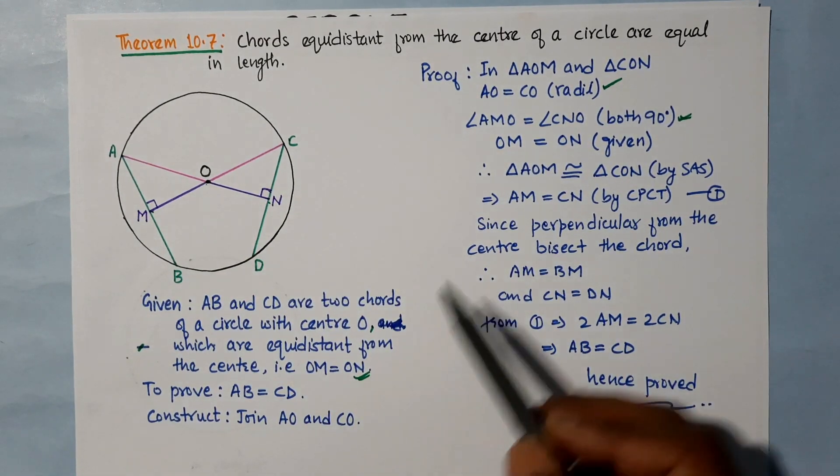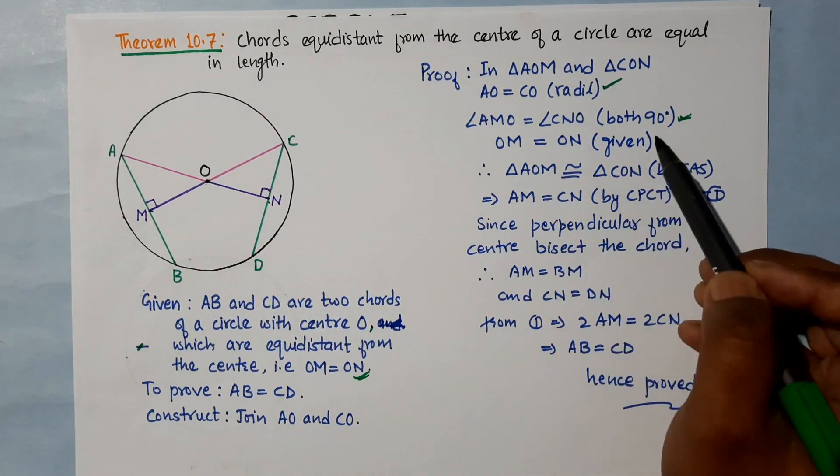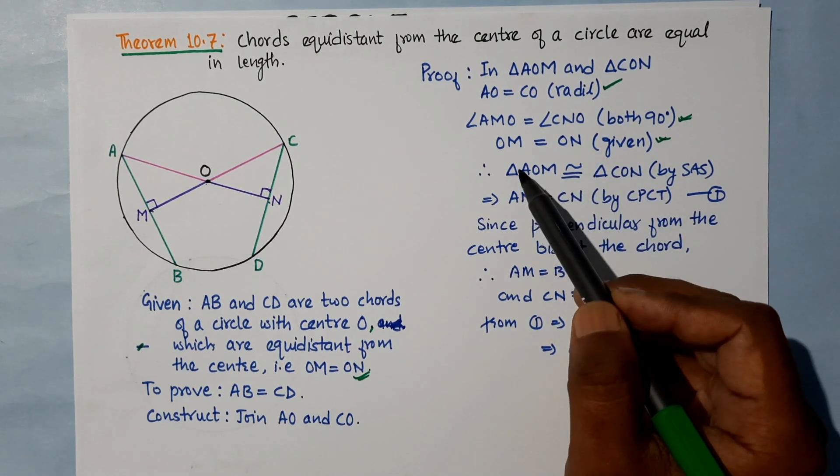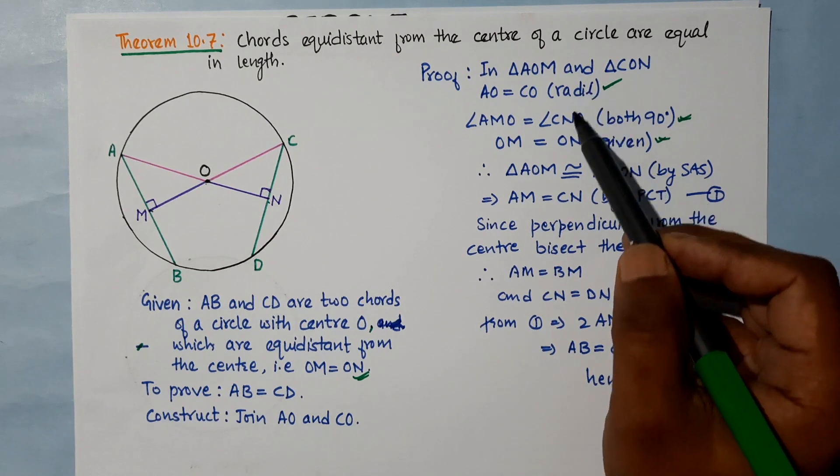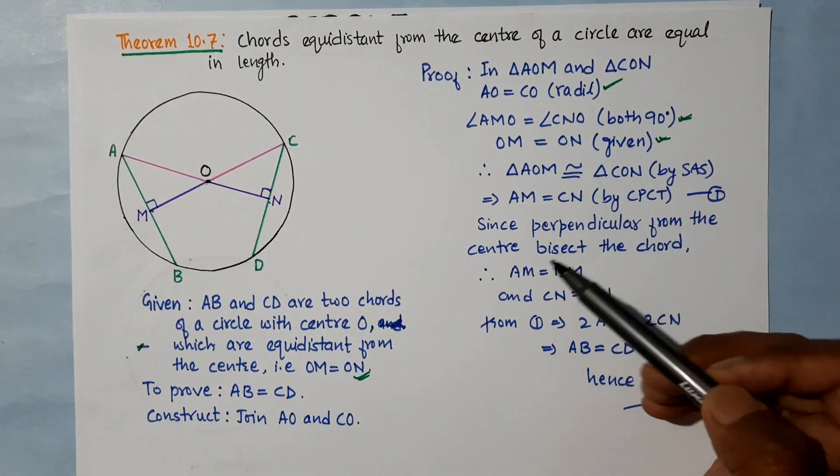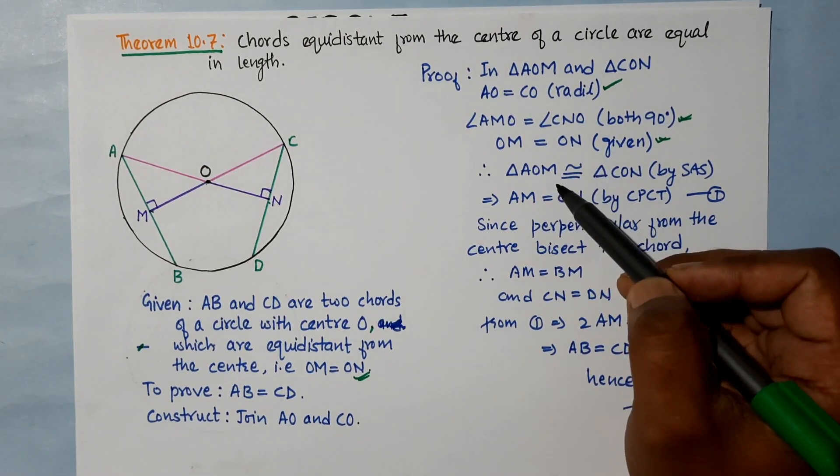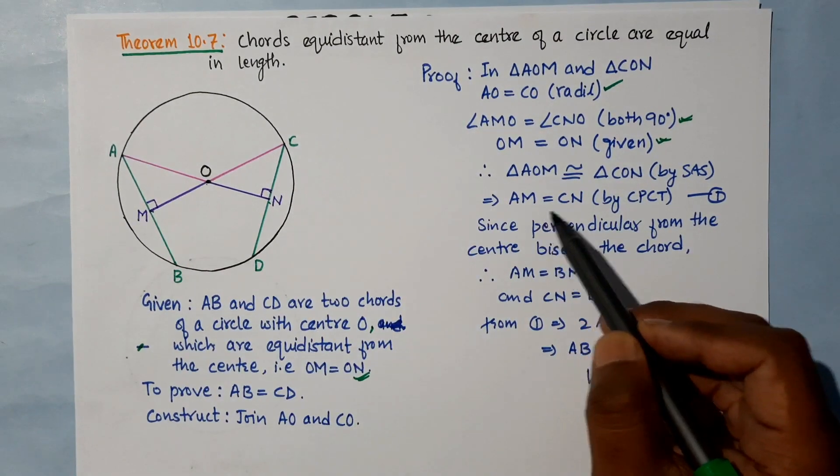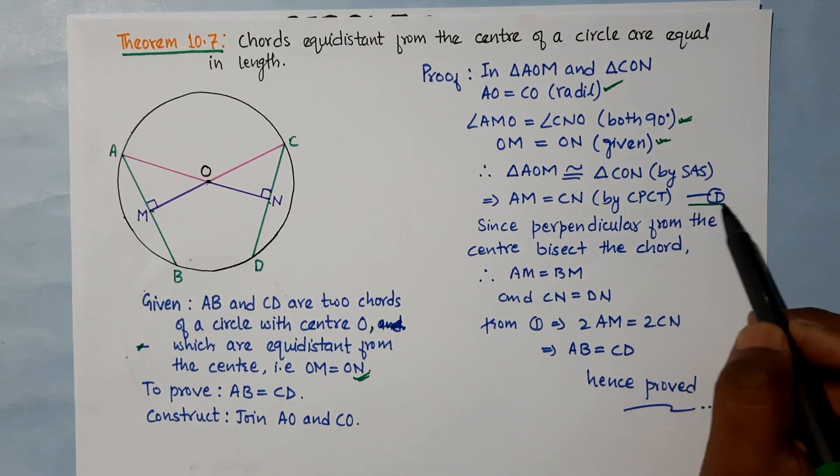That means it is 90 degrees. The third equal is OM is equal to ON, which we have been given in the theorem. Since the corresponding parts are equal, by CPCT we have AM is equal to CN.